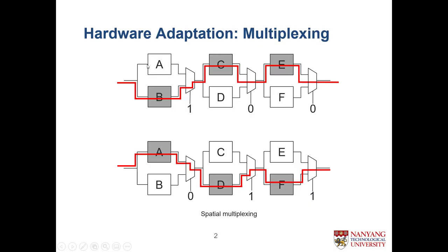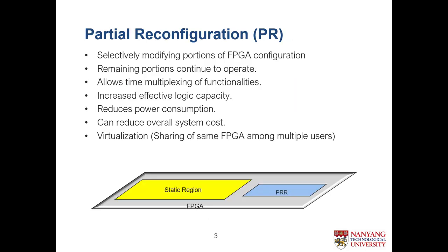This temporal multiplexing increases the effective logic capacity because hardware one and hardware two don't need to sit concurrently, requiring more FPGA area. This also helps reduce power consumption by reducing the area, which directly results in reduced power. It reduces system cost because you need a smaller FPGA. A major advantage is virtualization of FPGAs — one FPGA chip can be shared among multiple users by designating different regions, and people can use different regions without disturbing others.